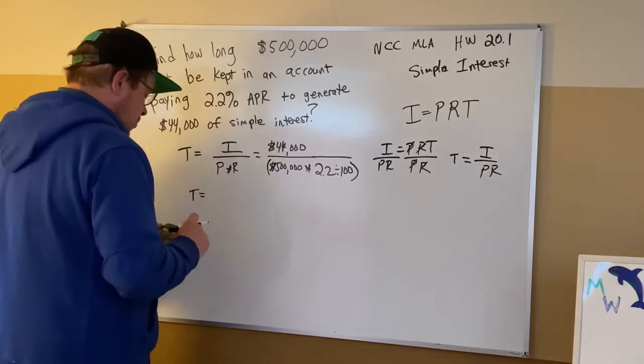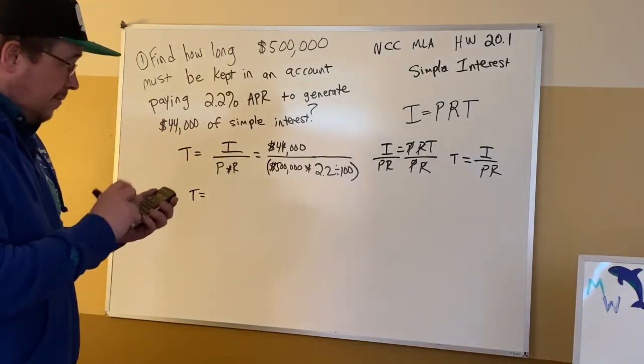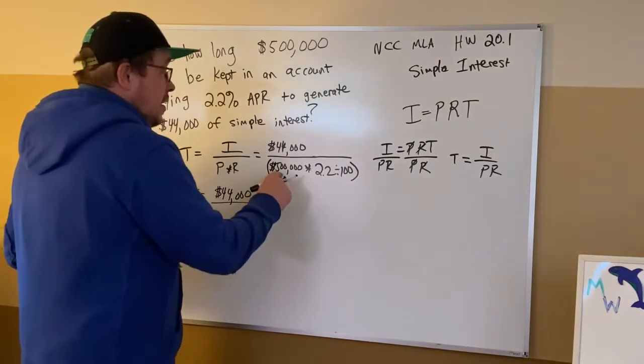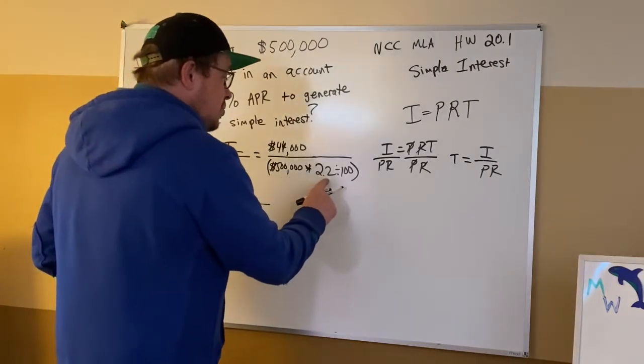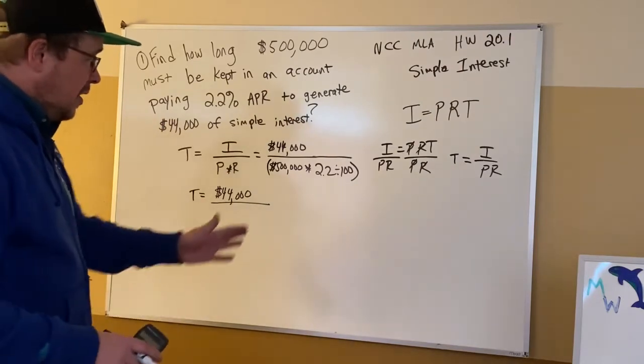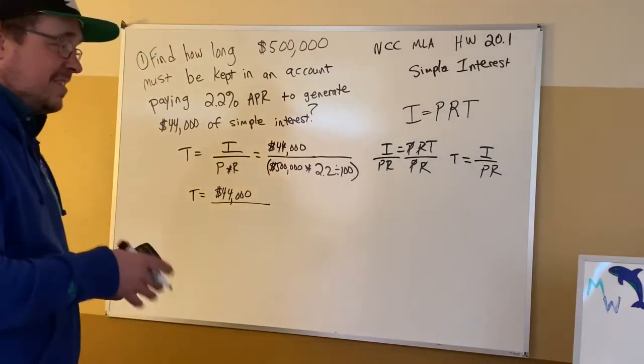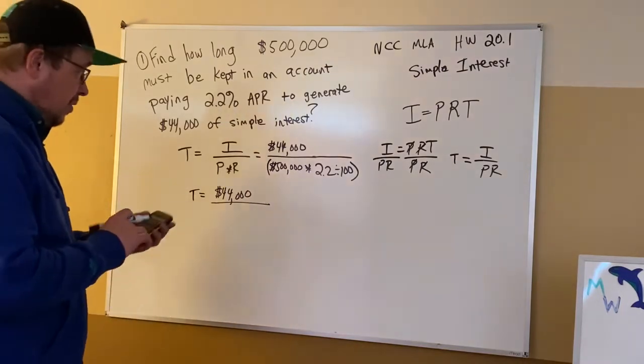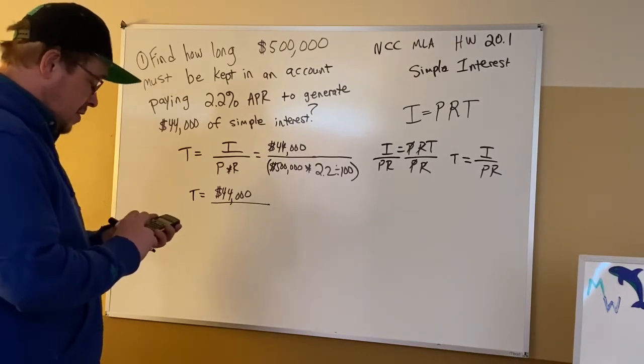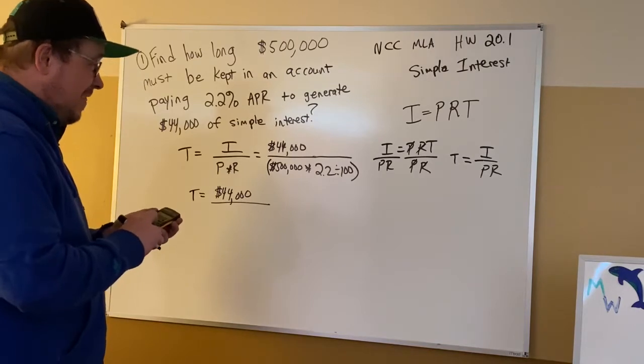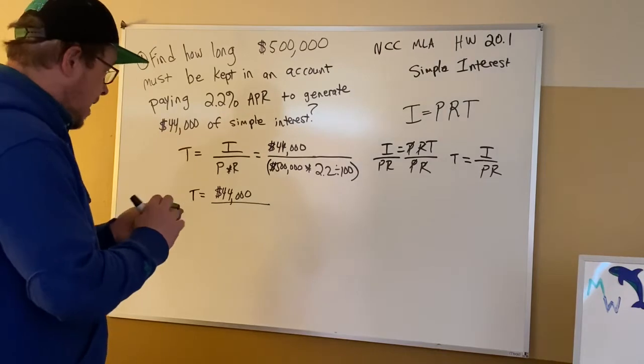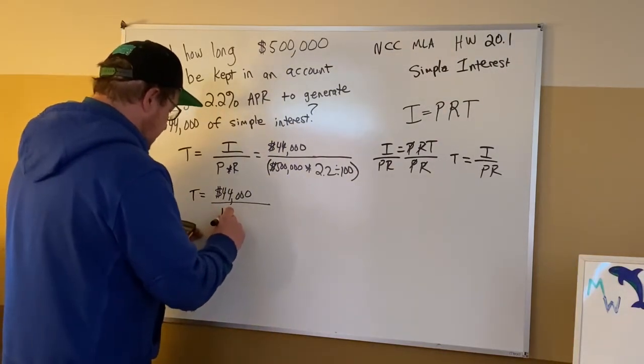And so T will be equal to, I'll leave my 44,000 so we can watch it develop before us. Here's 500,000 times 2.2 divide by 100 per percent. We're going for years, so I don't have to say how many times per year. I only have to do the 2.2 divide by 100, I don't have to slice it further because of doing it multiple times per year. So the denominator becomes 500 times 2.2, and then I divide that by 100, and that equals 11 followed by 3 zeros.